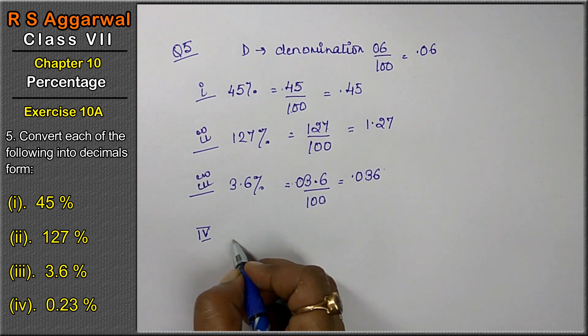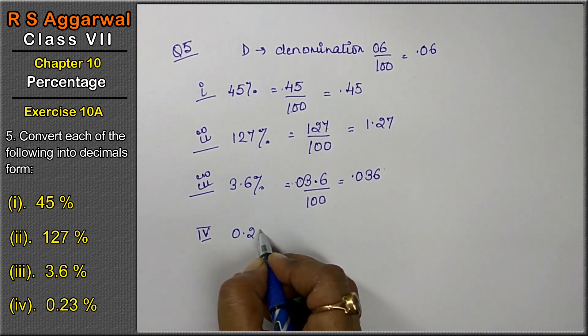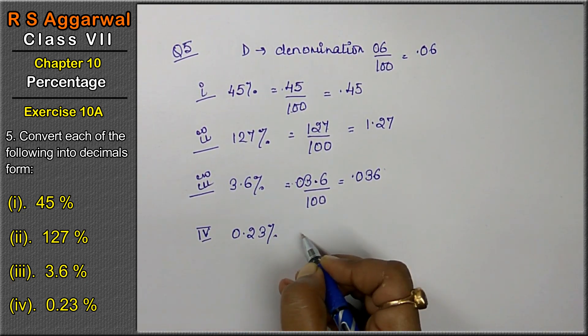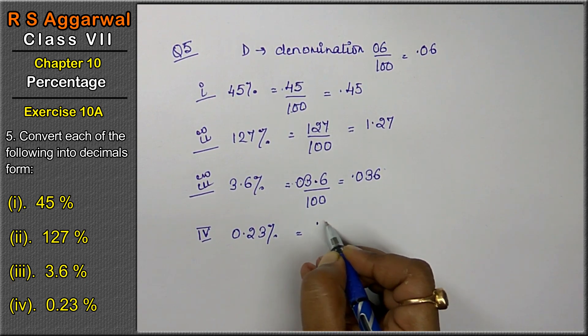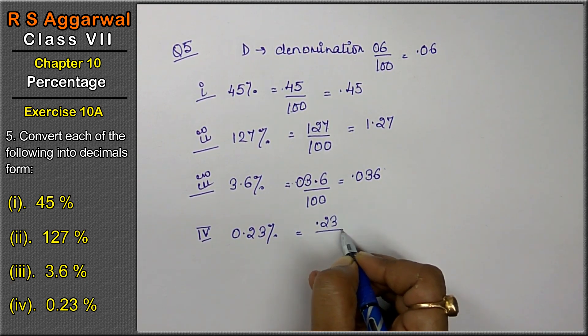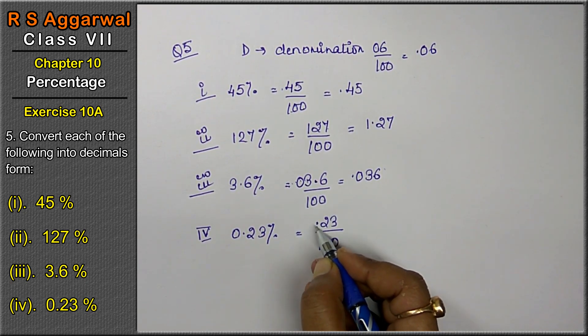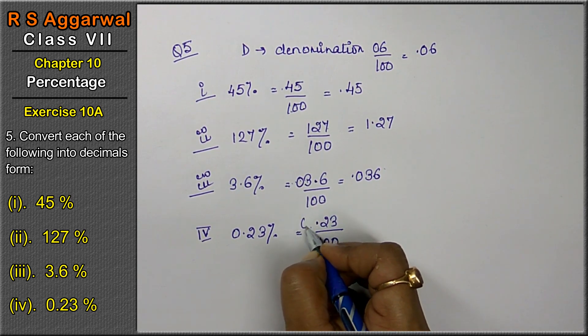Fourth part is 0.23%. Percentage we write as upon 100, that means 0.23 upon 100. Now here no values are written, just 0 0.